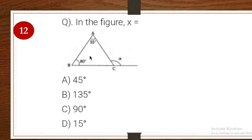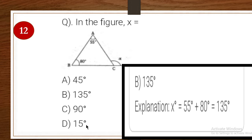Next one: in the figure, with angles 55° and 80°, find X. Options: 45, 135, 90, 50 degrees. Explanation: internal angles add up to the exterior angle, so 55° + 80° = 135°. The answer is 135 degrees, option B.